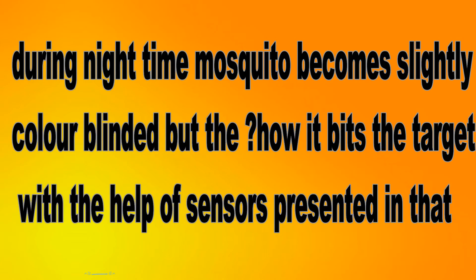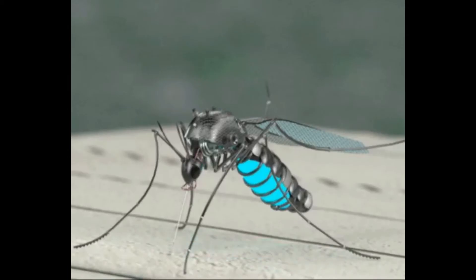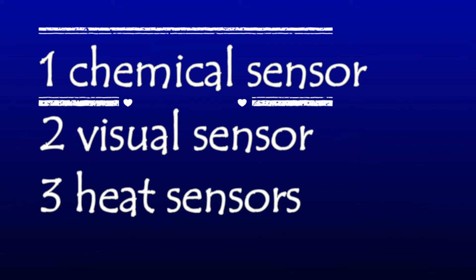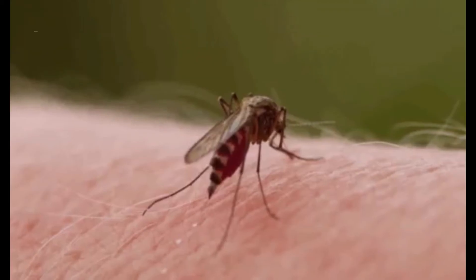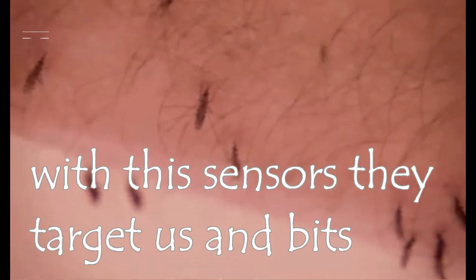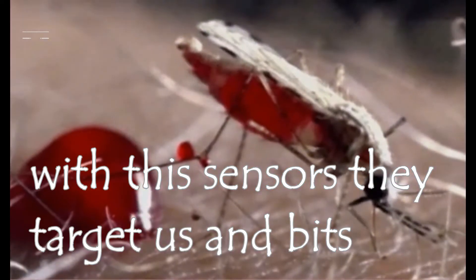During nighttime, mosquitoes will have slight color blindness. But the question is, how do mosquitoes target us and bite us? The answer is simple. Mosquitoes have sensors in their body. The sensor is mounted on the antenna of the mosquito. There are three types of sensors: the first one is the chemical sensor, the second one is the visual sensor, and the third one is the heat sensor. With the help of these sensors, mosquitoes revolve around heads, target people, and bite us.